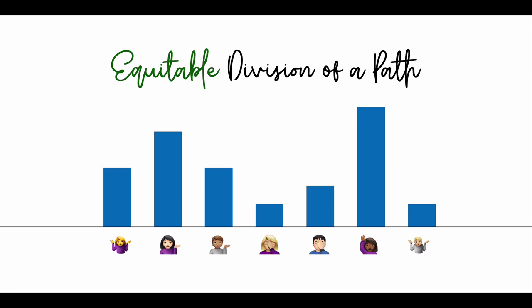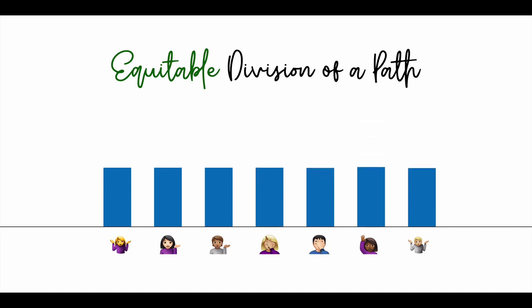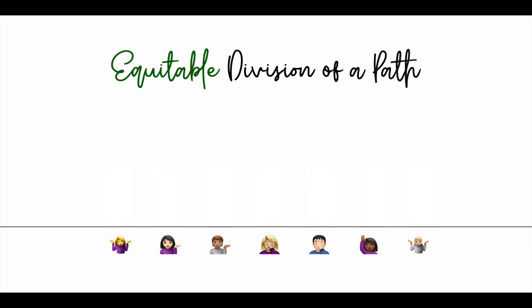We are trying to divide N indivisible items among agents in such a way that the allocation is equitable, which is to say that the agents value their own bundles in the same way.